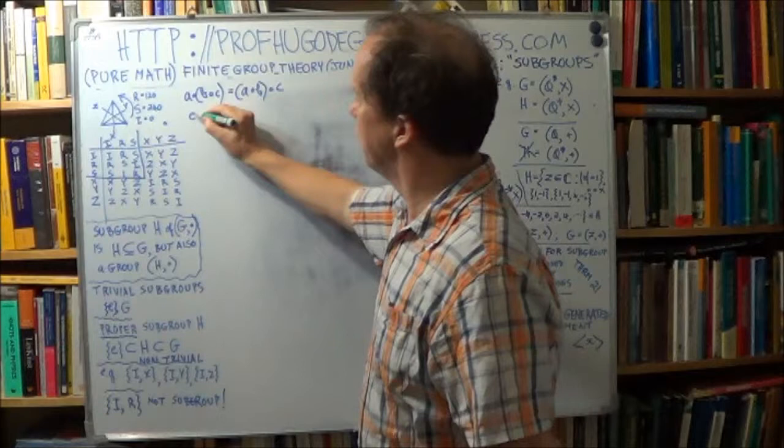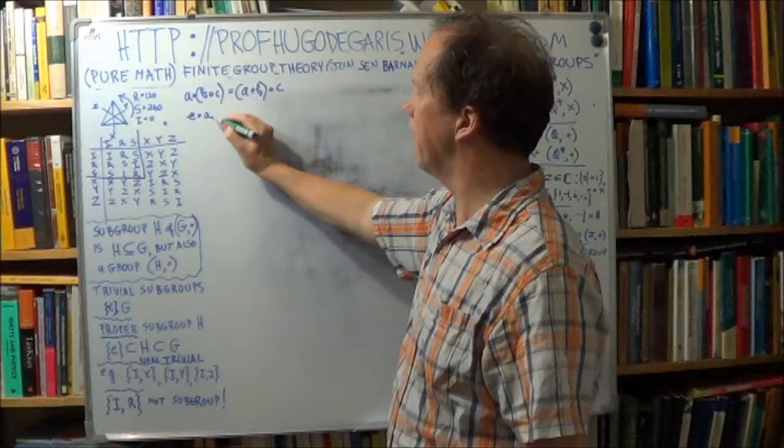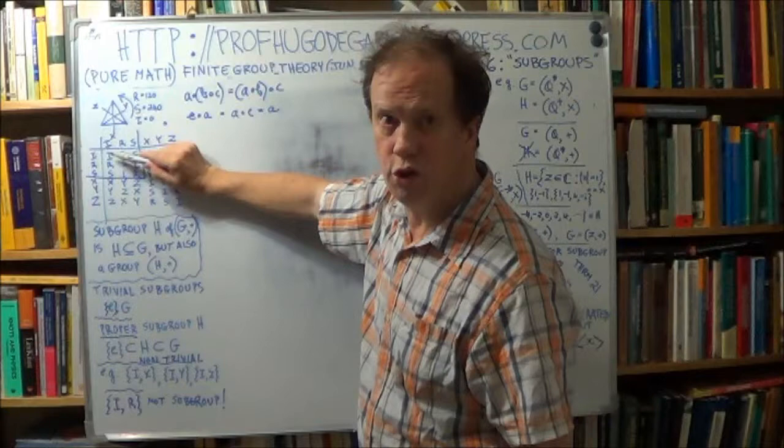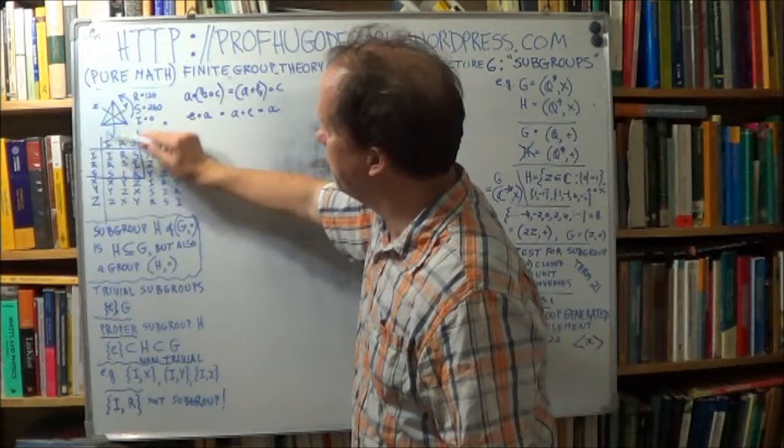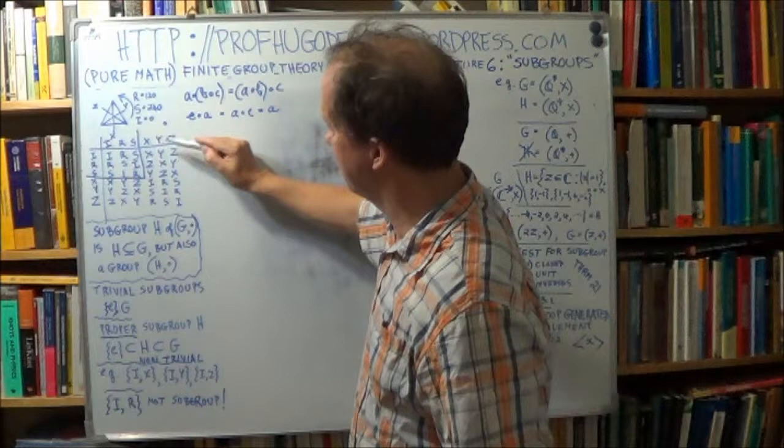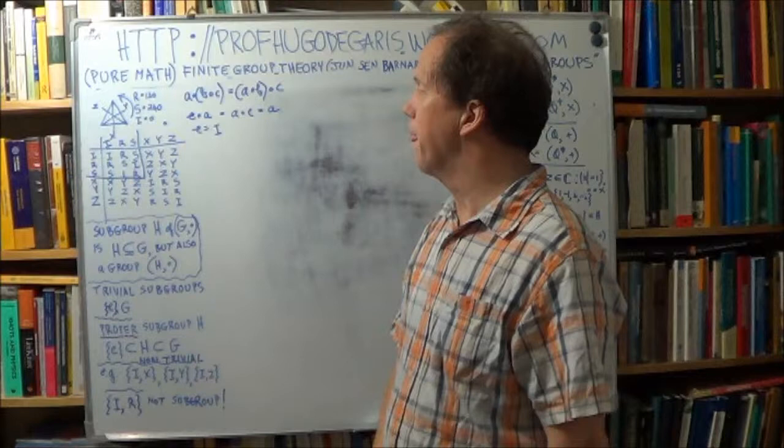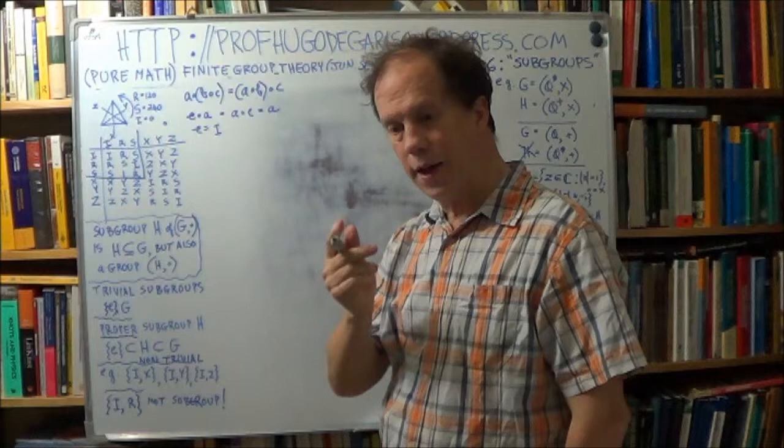There has to be a unit. Remember, unit is usually written little e. So, little e times A, for any member of your group A, that's equal to A times E, and that's just equal to A. Now, the unit here, in fact, is the I. That's the do nothing. You don't rotate or flip around, you know, just do nothing. So, I by anything is just anything. So, I by R is R, I by S is S, I by X is X, and so on. So, the unit, in this case, the unit is just I. So, there is a unit element.